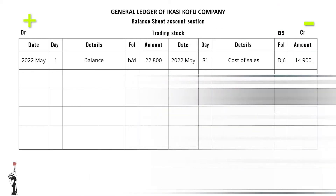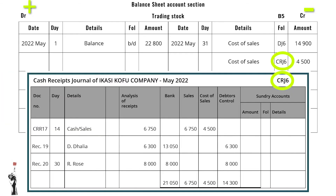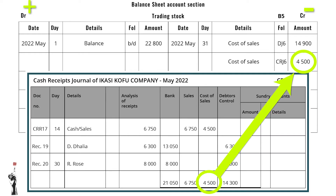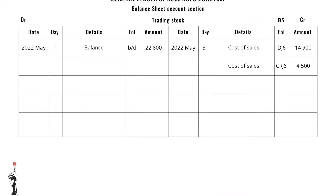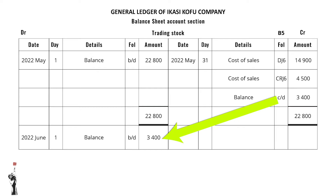Then we'll have to record the cost of sales of the cash transactions. This will also be on the credit side, as trading stock left the business. Remember to balance the trading stock account at the end.